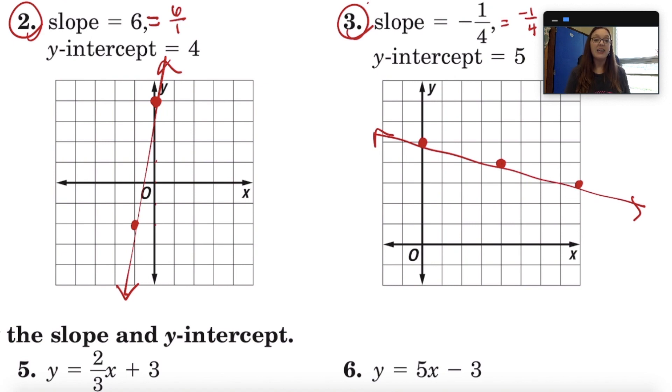And then number three, the slope is listed as negative one fourth. So I rewrote it as negative one over four. So that means you go down one unit and then right four units. So we went down one, right four, down one, right four, and so on.